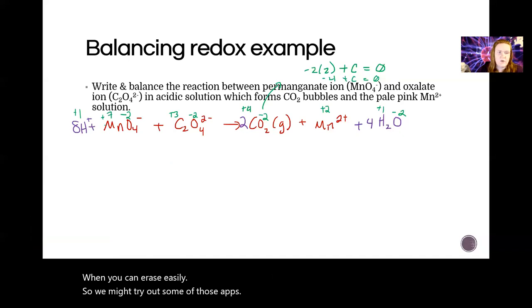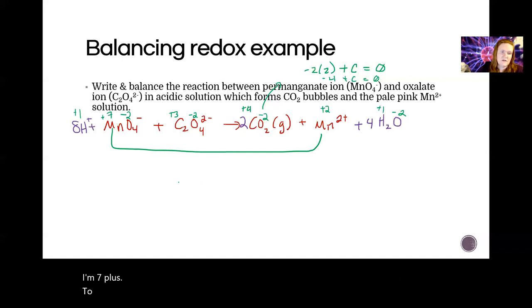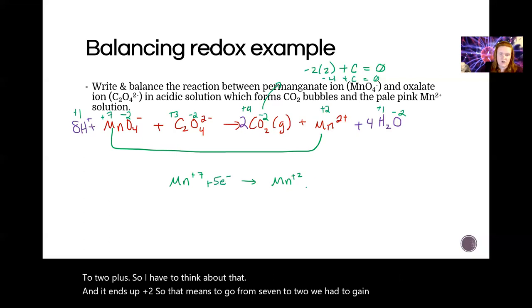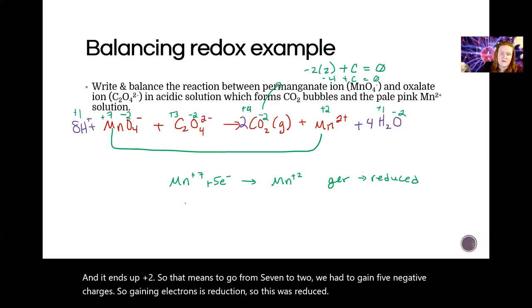All right, so we're going to look for what's changing, right, and so I see that H+ on this side is the same as H+ on that side. Mn goes from seven plus to two plus. So I have to think about that. Manganese is plus seven and it ends up plus two. So that means to go from seven to two, we had to gain five negative charges. So gaining electrons is reduction. So this was reduced. Okay.